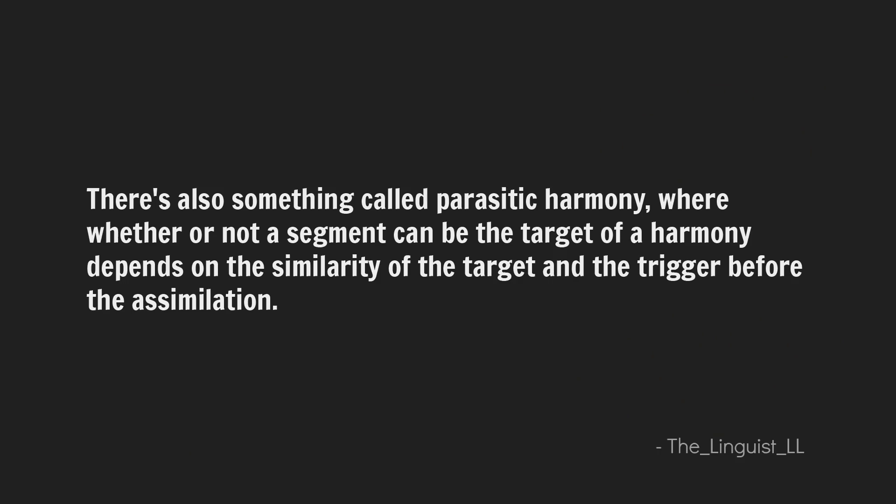There's also something called parasitic harmony, where whether or not a segment can be the target of a harmony depends on the similarity of the target and trigger before the assimilation. Just want to put that on screen so people know about it. Vowel length harmony is not a thing. If you're looking for more out-of-the-box harmony systems, check out rhotic harmony — it's immensely rare, and it's this idea where if there's a rhotic vowel in a root, affix vowels must also be rhotic. It's cool, really rare — go for it if you want, but I suggest sticking to the big four mentioned in the main video.